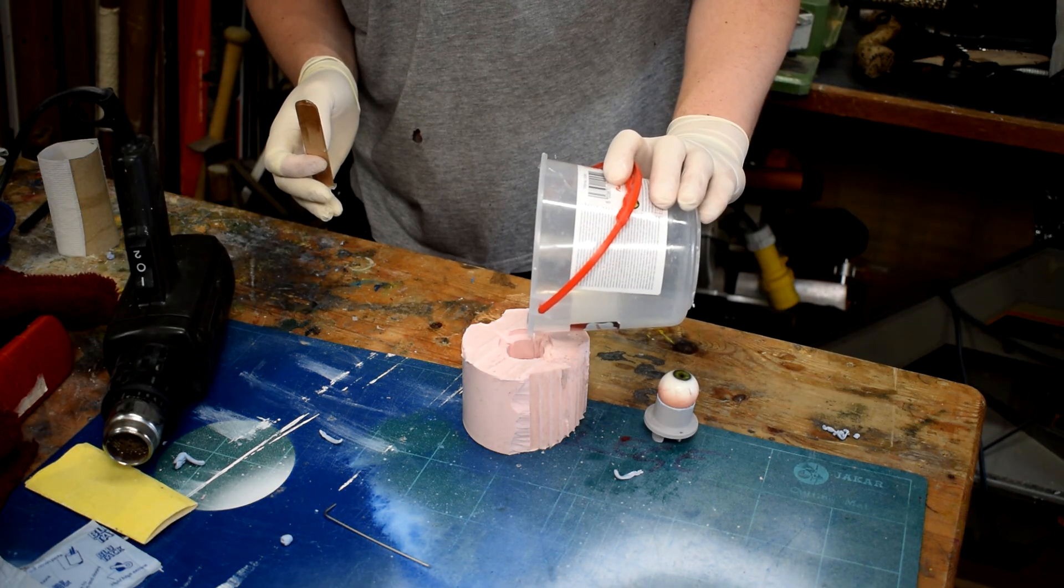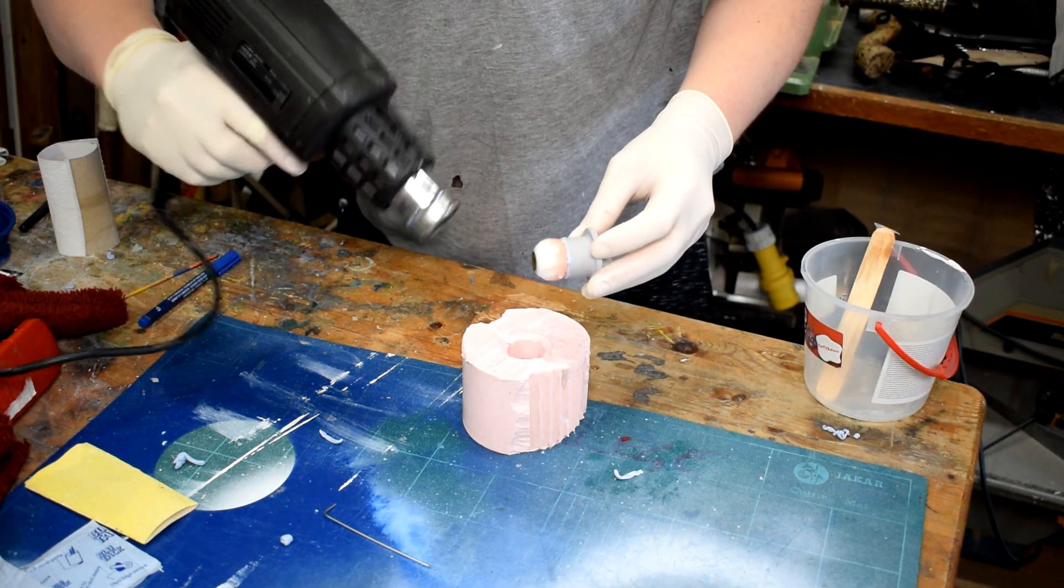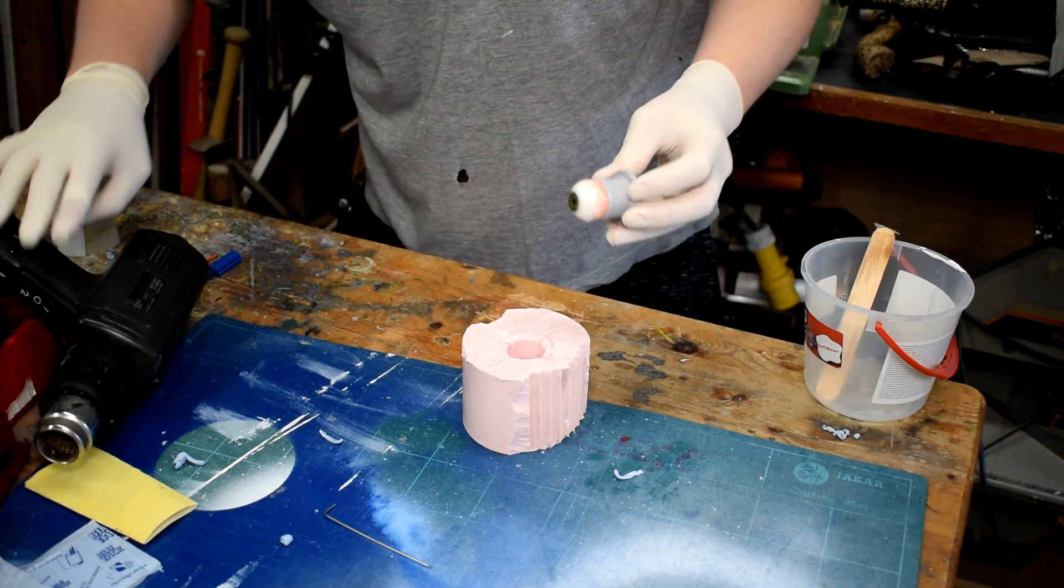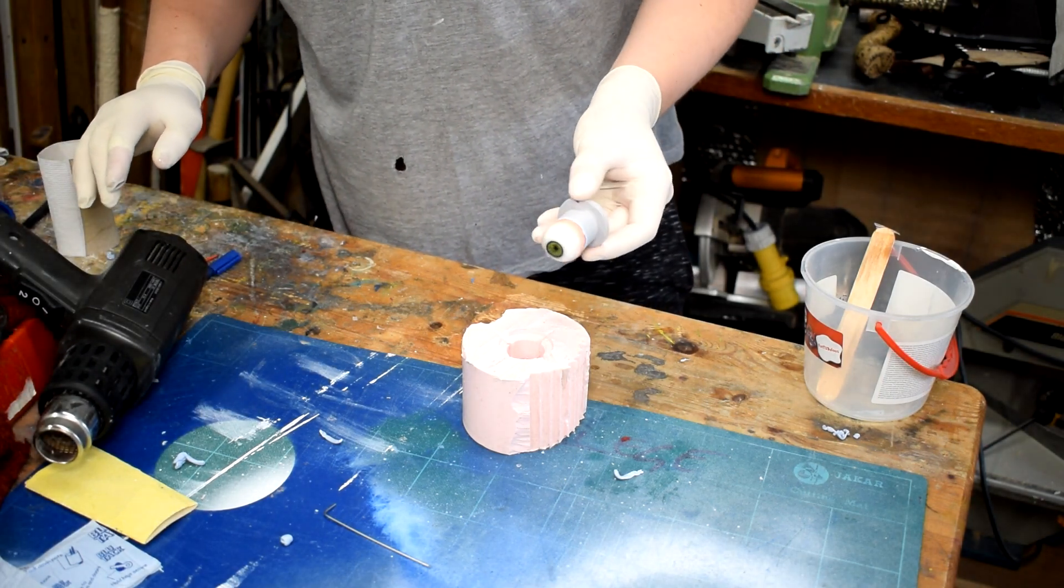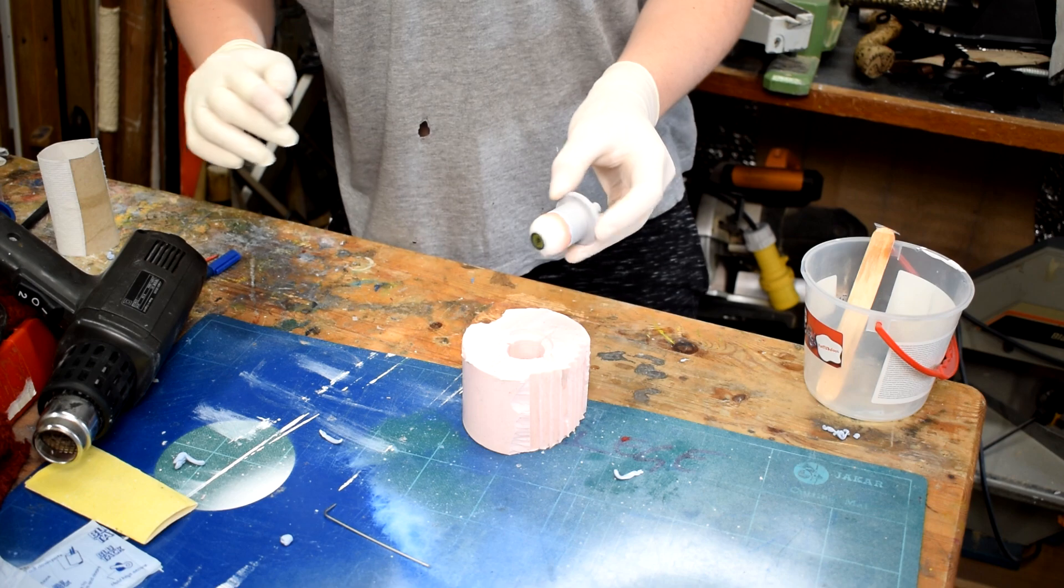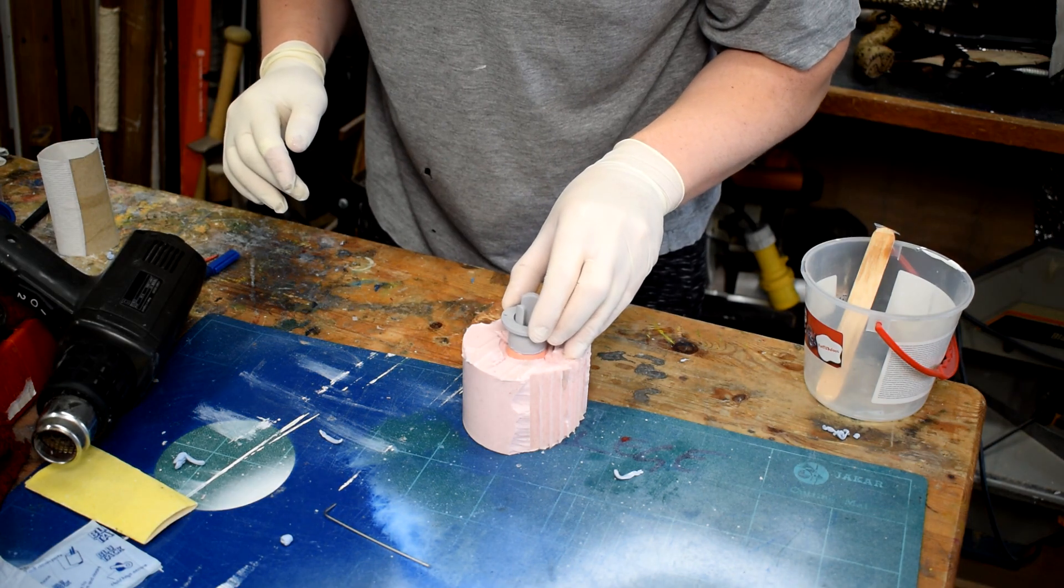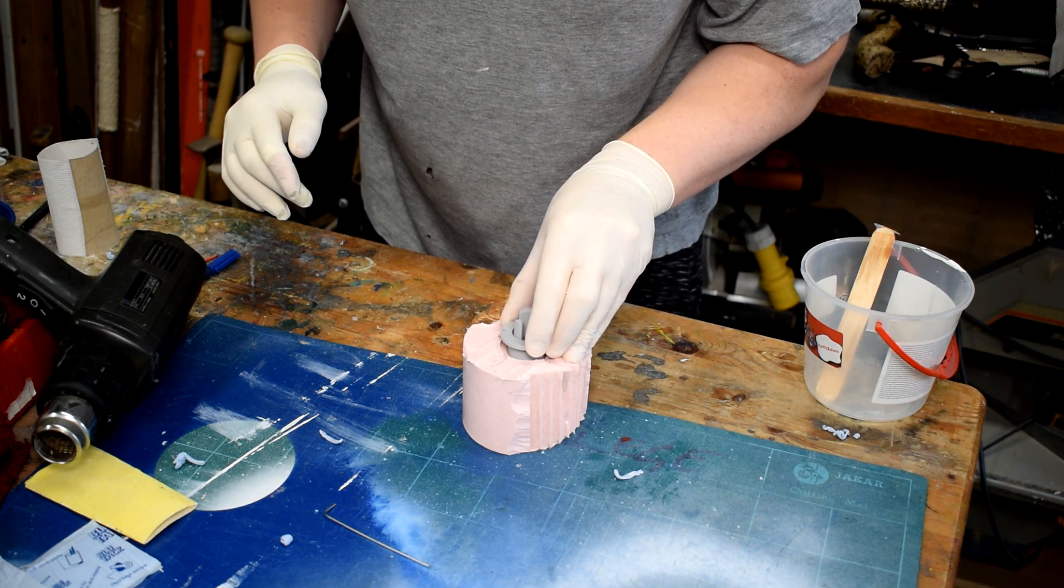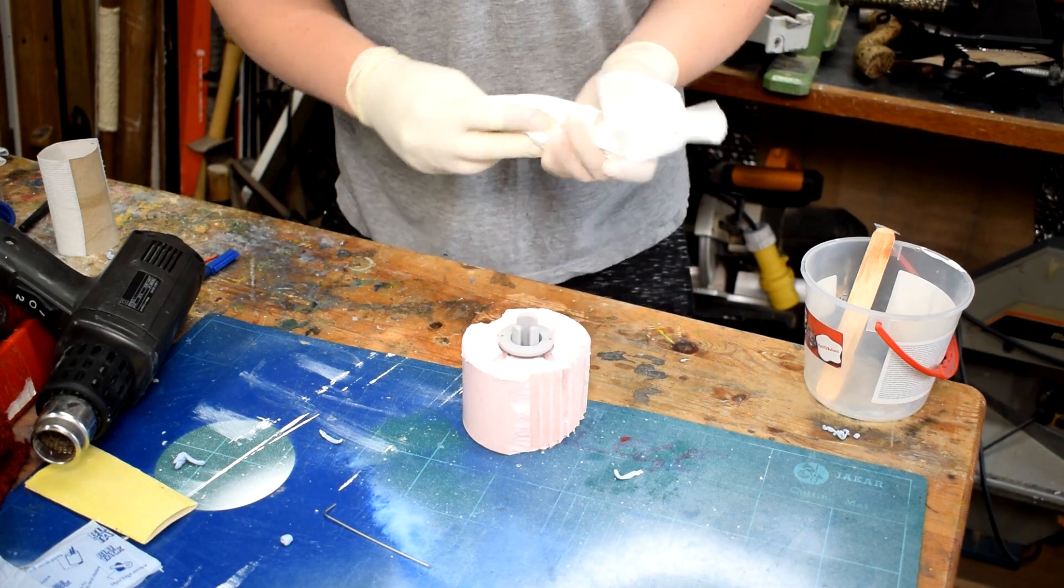Then you pour it in. Give everything a quick go over with a heat gun because it seems to pop bubbles and I also think it makes it less viscous which allows the bubbles to get out easier. Then plop it in and wipe up any excess.